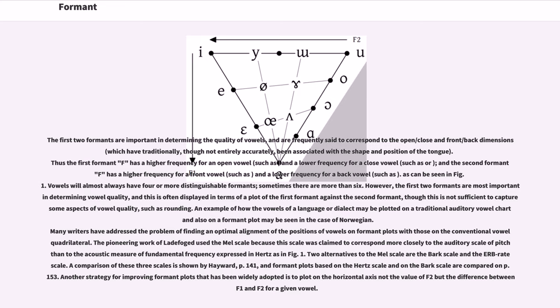Two alternatives to the Mel scale are the Bark scale and the ERB rate scale. A comparison of these three scales is shown by Hayward, page 141, and formant plots based on the hertz scale and on the Bark scale are compared on page 153. Another strategy for improving formant plots that has been widely adopted is to plot on the horizontal axis not the value of F2 but the difference between F1 and F2 for a given vowel.